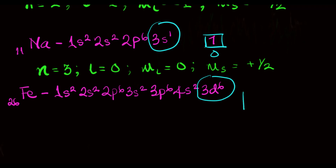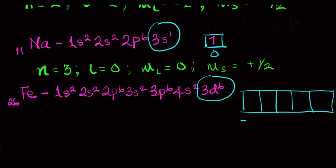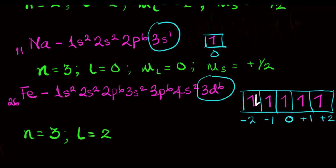Remember the d subshell has 5 orbitals, with the following magnetic quantum numbers: minus 2, minus 1, 0, plus 1, and plus 2. So if we fill these electrons according to Hund's rule — since these are degenerate orbitals — we get 1, 2, 3, 4, 5, and the last (sixth) electron will go into the first orbital with a magnetic quantum number of minus 2. Therefore the 4 quantum numbers of the last electron in the iron atom are: N equals 3 (the third shell), L equals 2 (the d subshell), M sub L equals minus 2, and M sub S equals minus half, which is the downward spin.